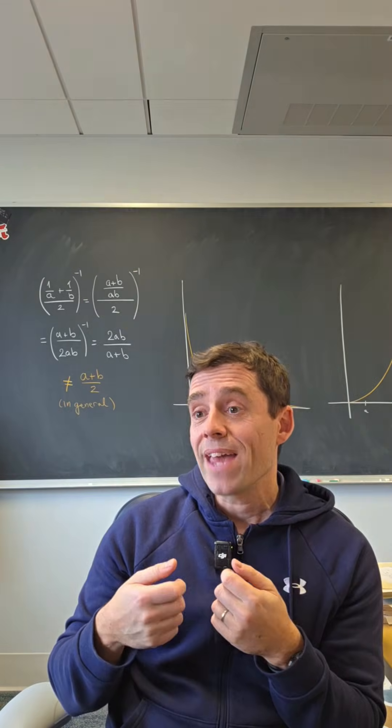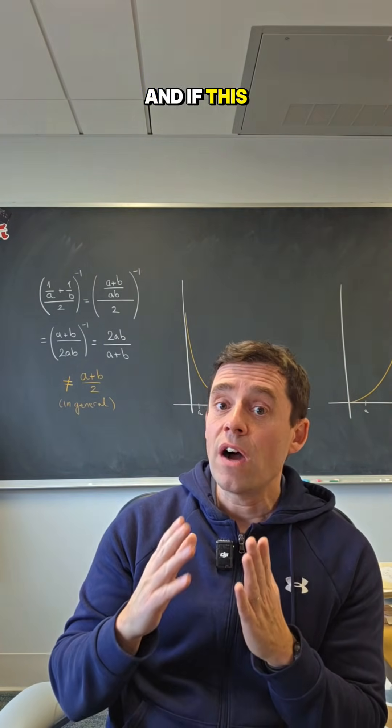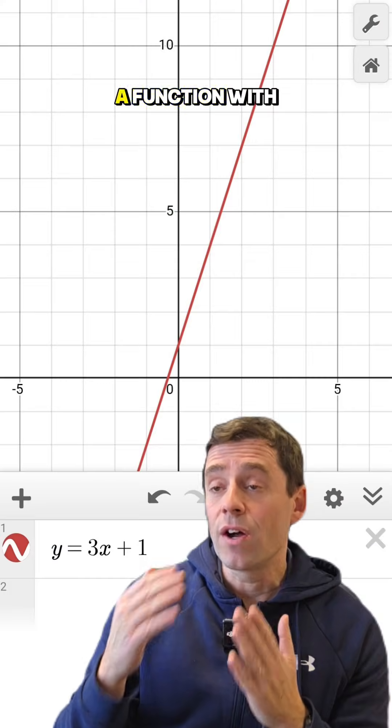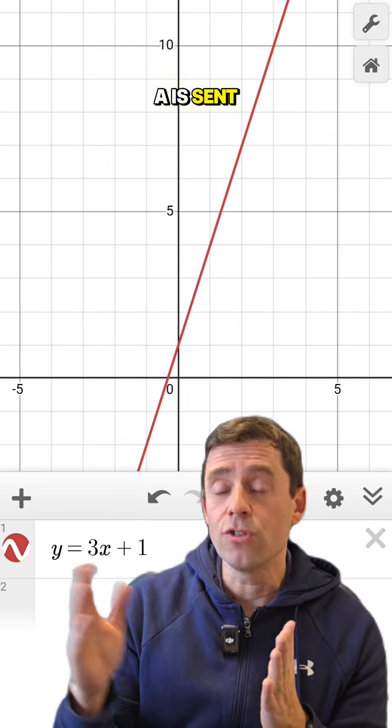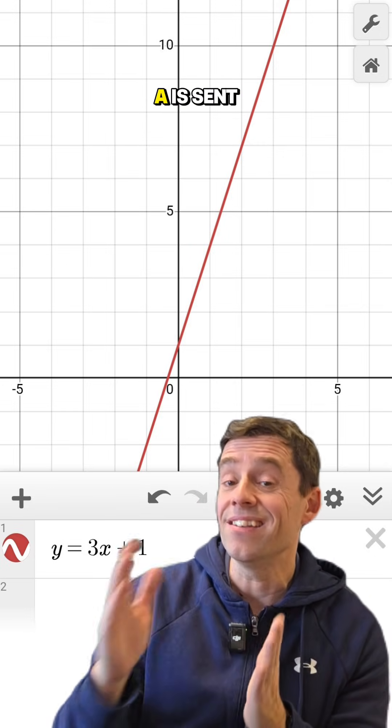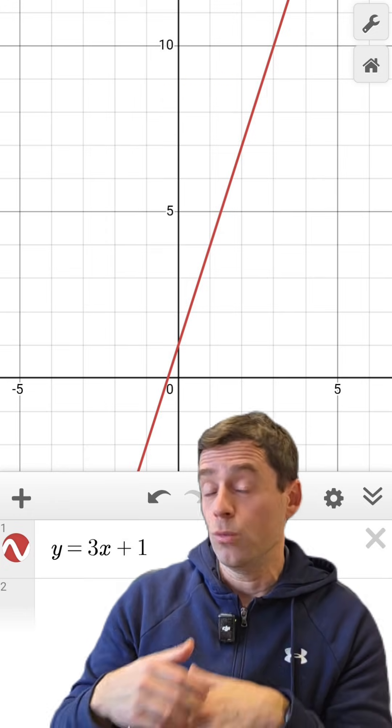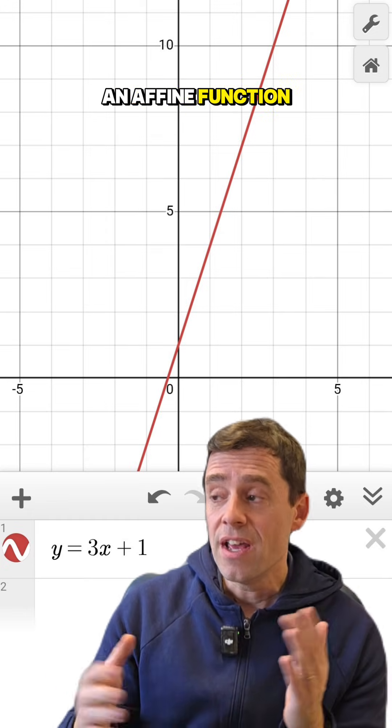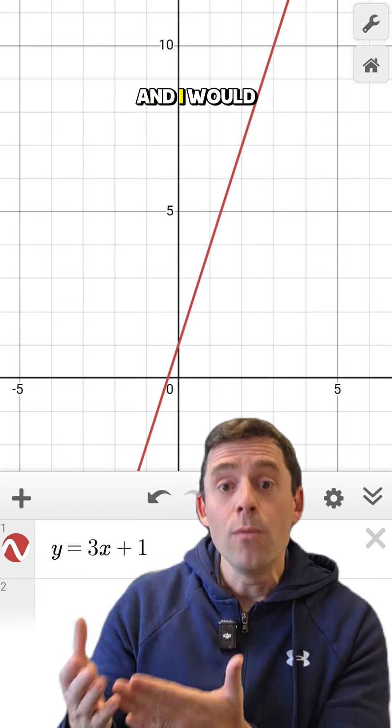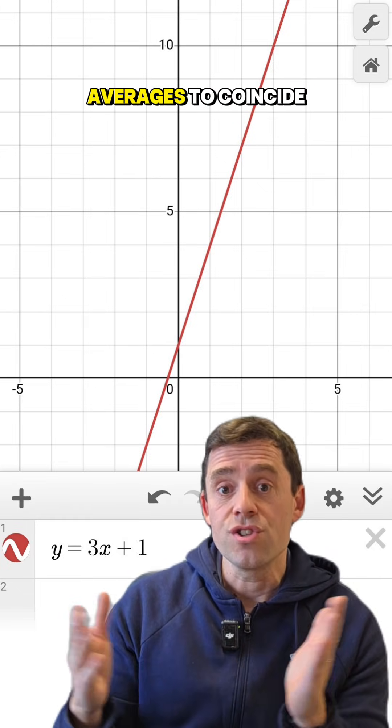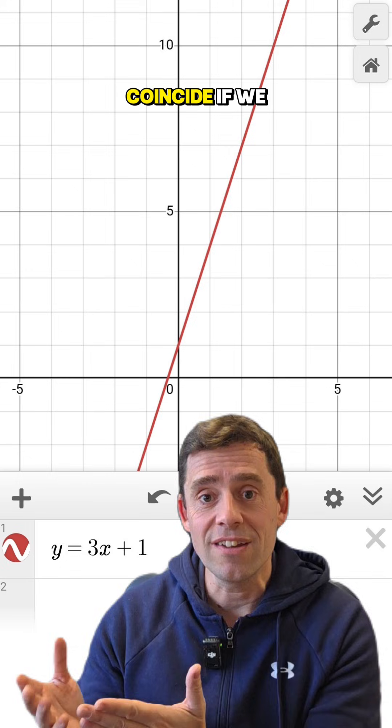And if this function had been a function with a linear graph, so instead of A is sent to 1 over A, if we had A is sent to 3A plus 1, for example, what we call an affine function, then that preserves linearity, and I would expect those two averages to coincide, and they do coincide if we use that function.